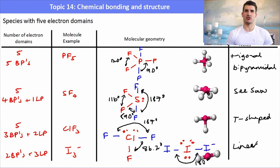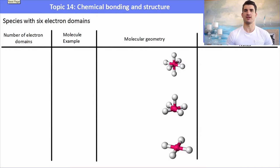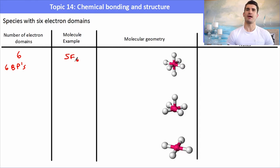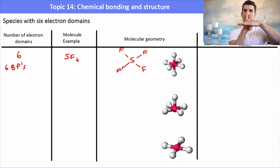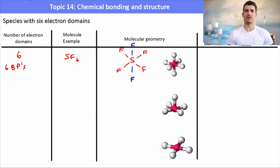Species with 6 electron domains: if we have 6 bonding pairs, an example is SF6, sulfur hexafluoride. We have a square planar arrangement of 4 fluorines in the same plane, and then 2 fluorines — one above and one below. We've seen this kind of arrangement in topic 13 with transition metals. This is called octahedral — named because it has 8 faces, not because of the 6 bonds.